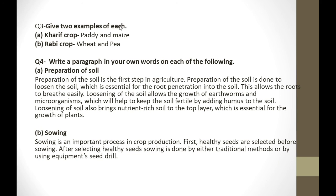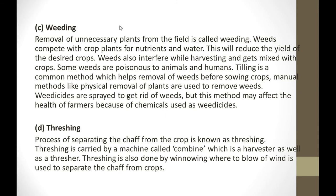The next part is sowing — the process of putting seeds into the soil. Sowing is an important process in crop production. First, healthy seeds are selected before sowing. After selecting healthy seeds, sowing is done either by the traditional method or by using equipment called a seed drill.